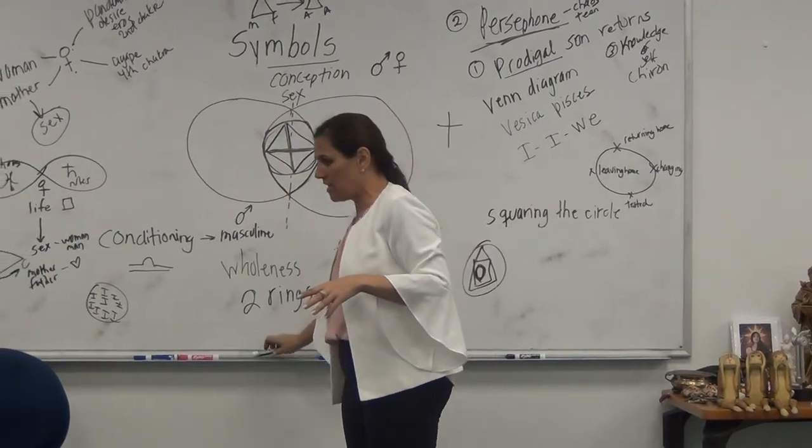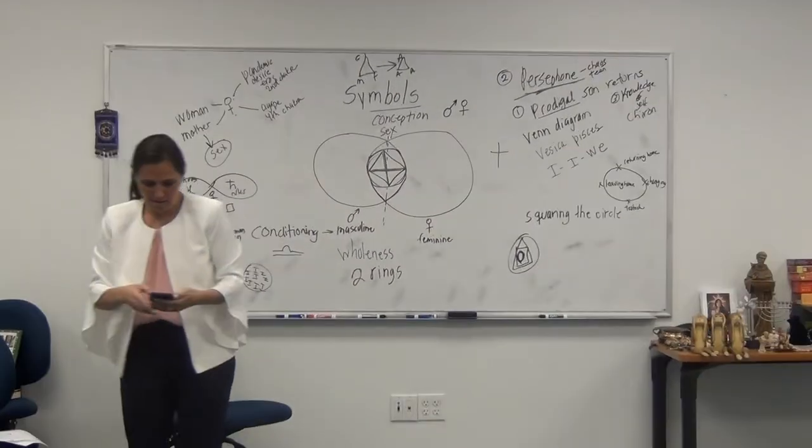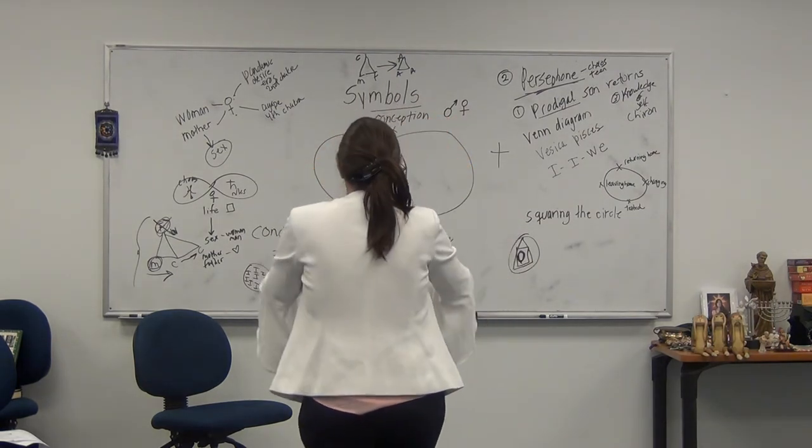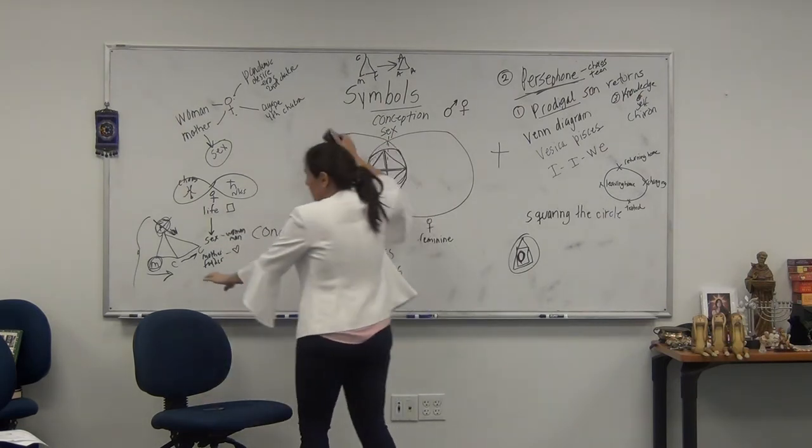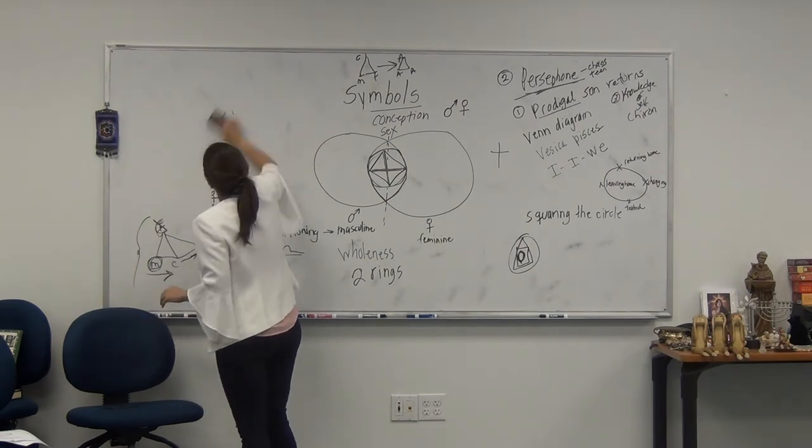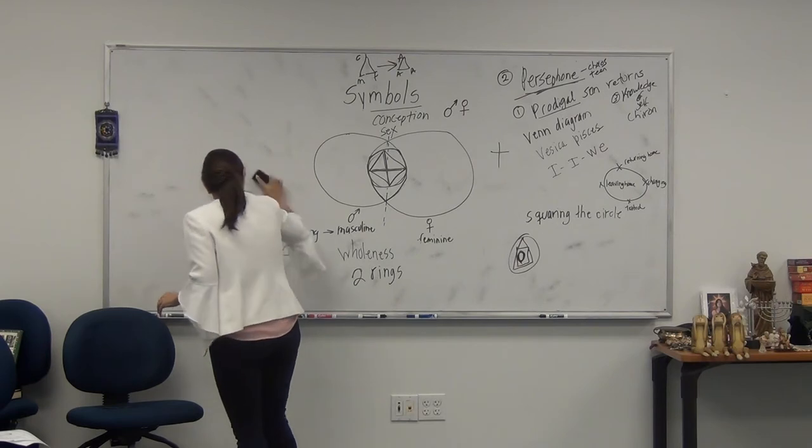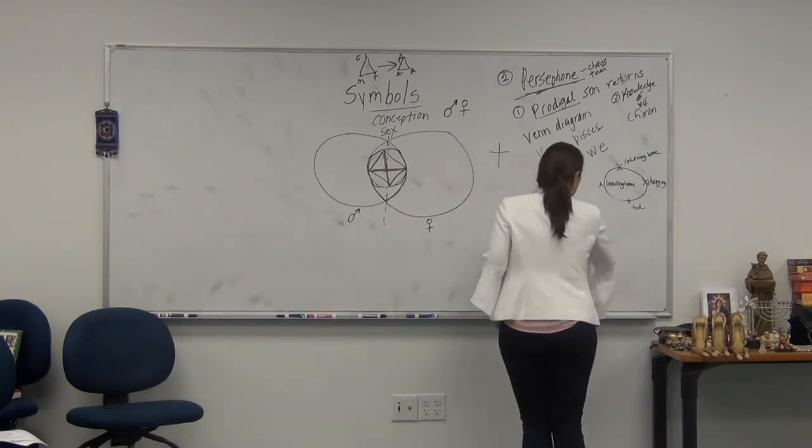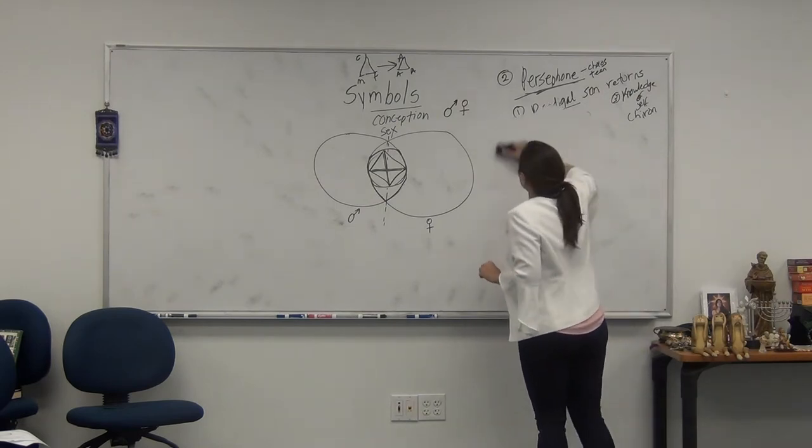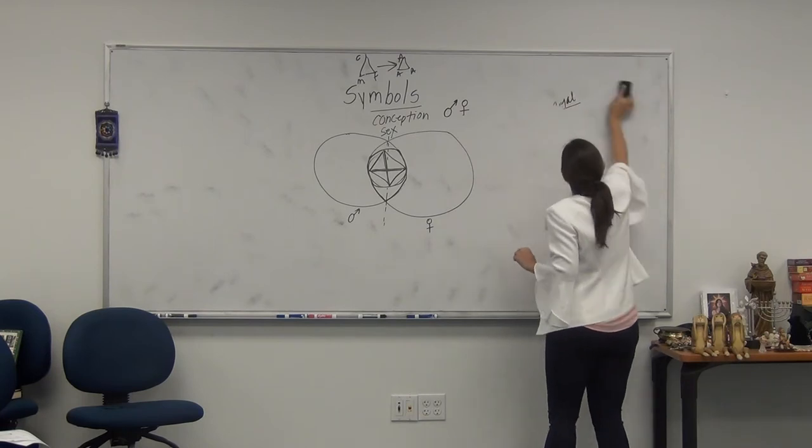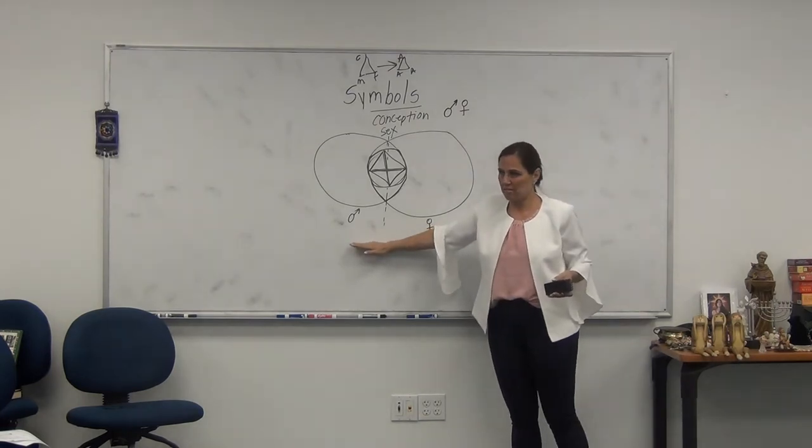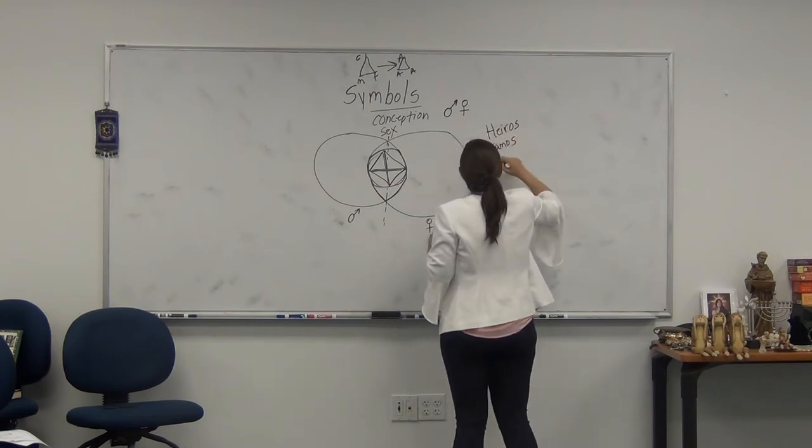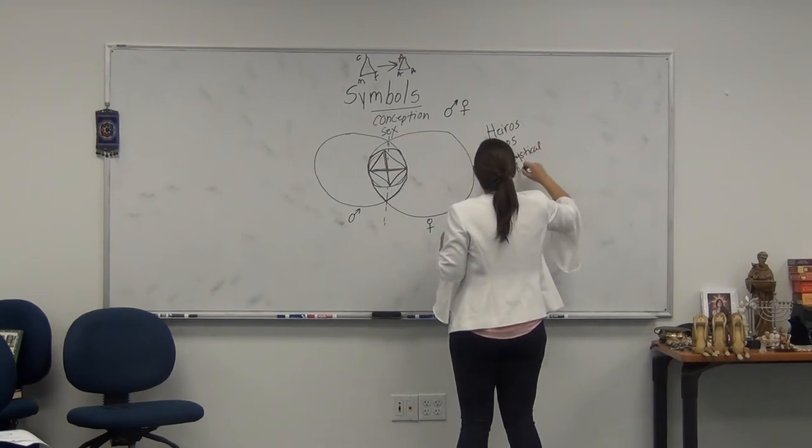I'm going to leave the center, but I want to talk about the hieros gamos. So the hieros gamos is a term that means mystical marriage. And the mystical marriage has to do with the marriage of self. So it's another way to describe this. Hieros gamos or mystical marriage. And you have a handout on this.